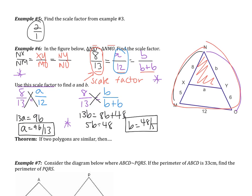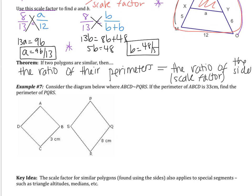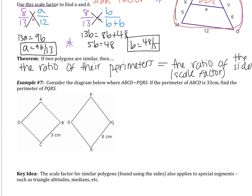The next theorem says: if two polygons are similar, then the ratio of their perimeters equals the ratio of the sides — which is the scale factor. So if I know the scale factor, I can find the perimeters without finding all the sides. Looking at number 7: ABCD is similar to PQRS. The perimeter of ABCD is 33. Find the perimeter of PQRS. The ratio of the perimeters equals the ratio of the sides.